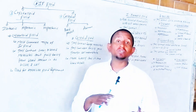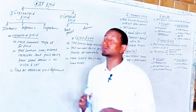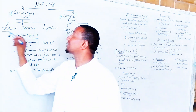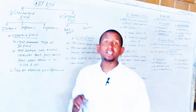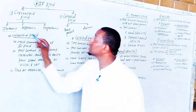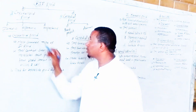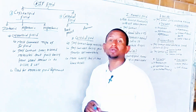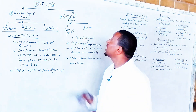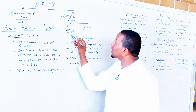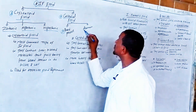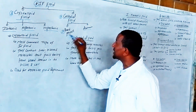Crystalloid fluid is not a colloidal fluid. Crystalloid fluid can be classified into three types: isotonic fluid, hypotonic fluid, and hypertonic fluid. Colloidal fluid includes blood products as well as albumin.